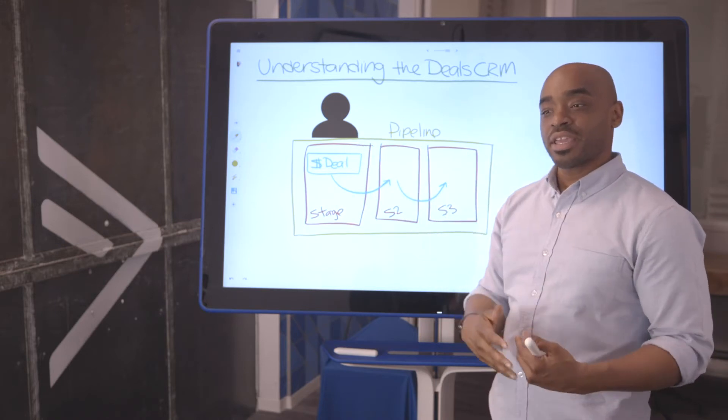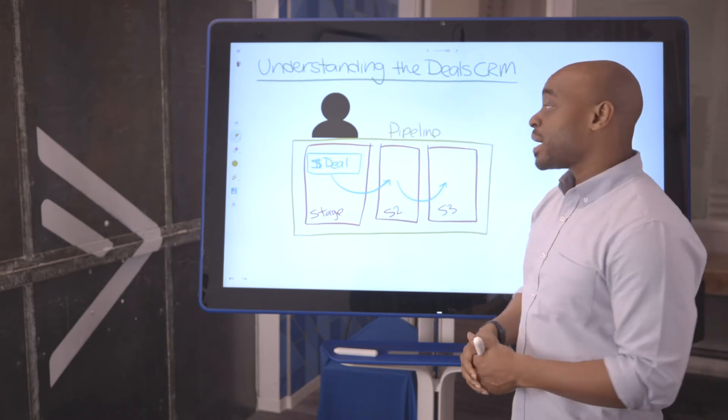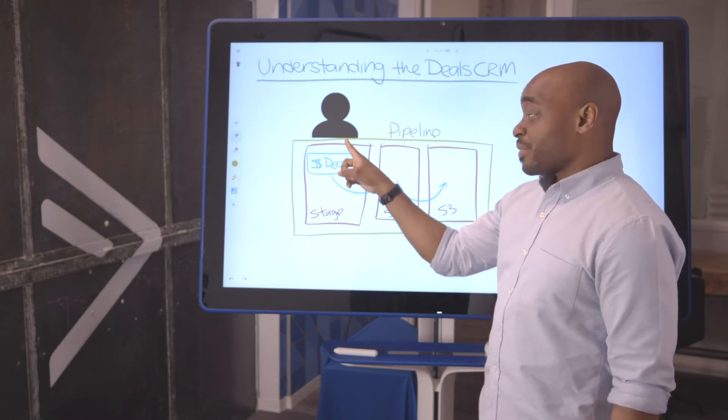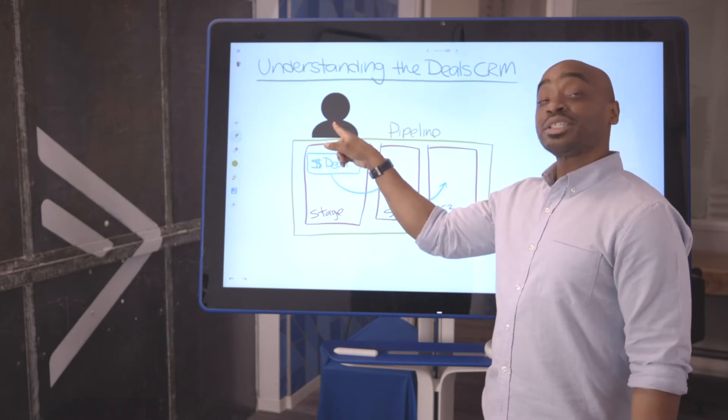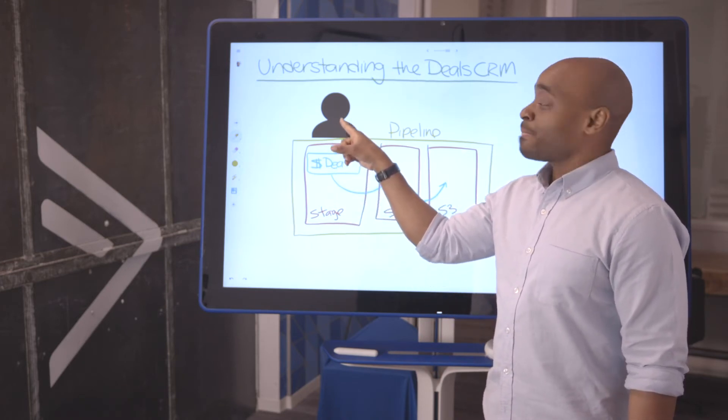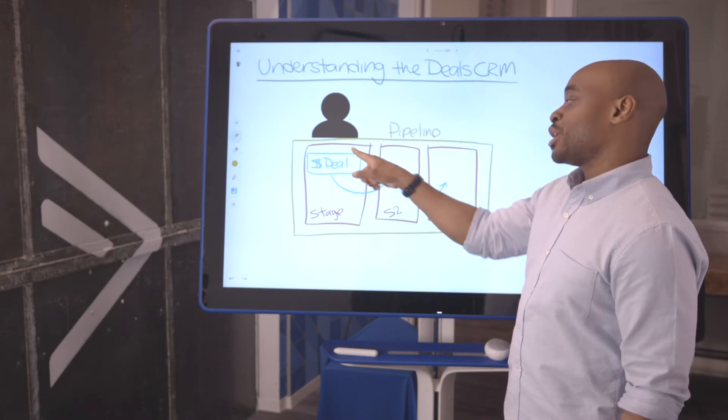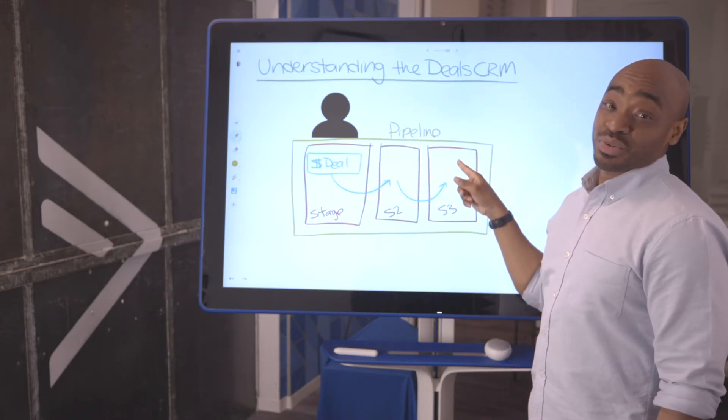The biggest connection that you can make in managing deals and ActiveCampaign is understanding that though the deal exists on the contact record, you are not automating the contact through stages. You're automating the deal through stages.